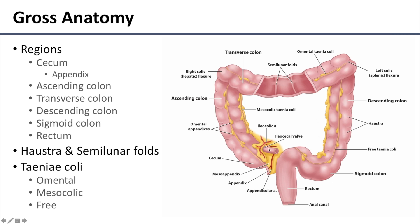In terms of its gross anatomy, the large intestine consists of the cecum and its attached appendix, the ascending colon, the transverse colon, the descending colon, the sigmoid colon, and the rectum. Between the ascending and transverse colon, we have what's known as the right colic flexure, oftentimes referred to as the hepatic flexure for its association to the liver. Connecting the transverse with the descending colon, we have the left colic flexure, sometimes referred to as the splenic flexure due to its association with the spleen.